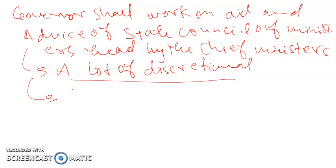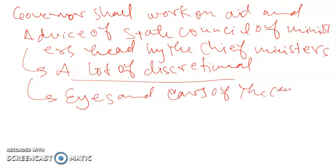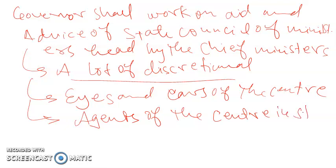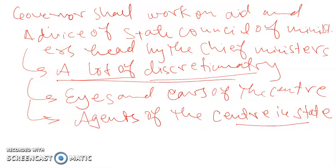The Governor functions as the eyes and ears of the central government in the state, acting as an agent of the center. Despite this, we must remember that the Governor works on the aid and advice of the State Council of Ministers, headed by the Chief Minister, even though he has been given a lot of discretionary power.